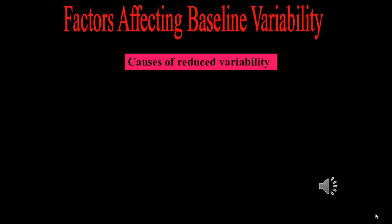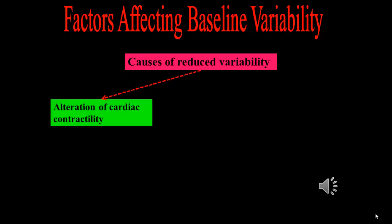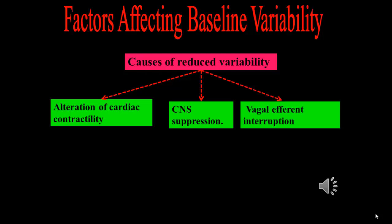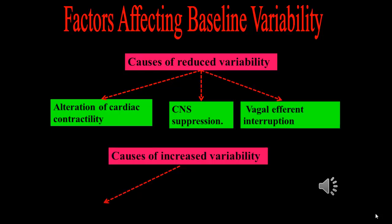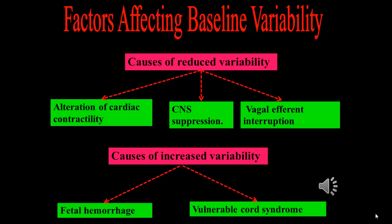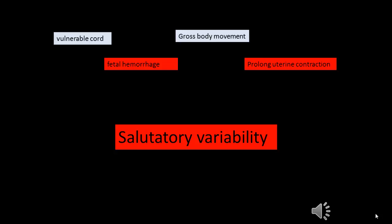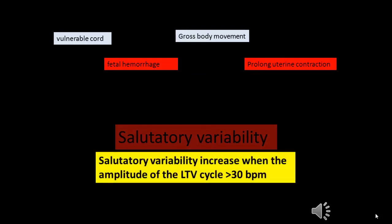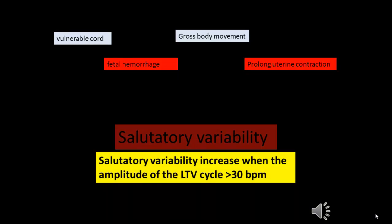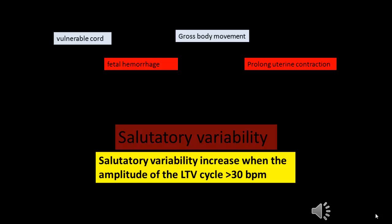Many factors affect baseline short-term variability. Factors causing reduced short-term variability include alteration of cardiac contractility, central nervous system suppression, and vagal effect interruptions. Factors causing increased variability include fetal hemorrhage, vulnerable cord syndrome, gross body movement, and prolonged uterine contraction, which can lead to saltatory variability. Saltatory variability is defined when the amplitude of the long-term variability cycle exceeds 30 beats per minute.